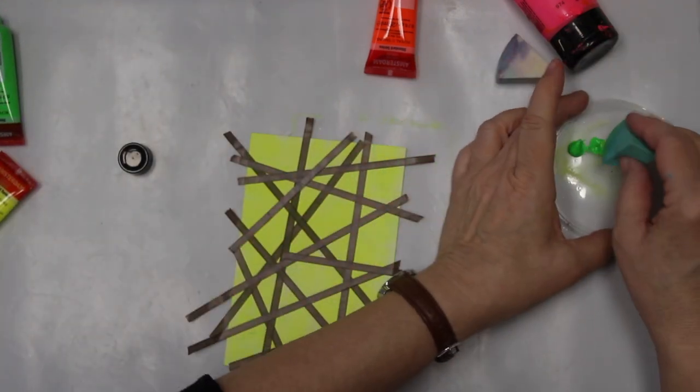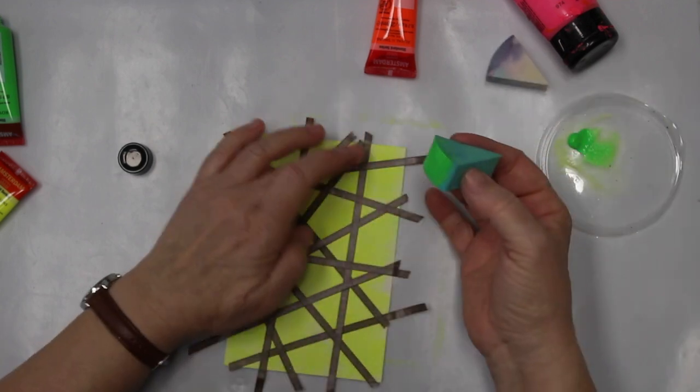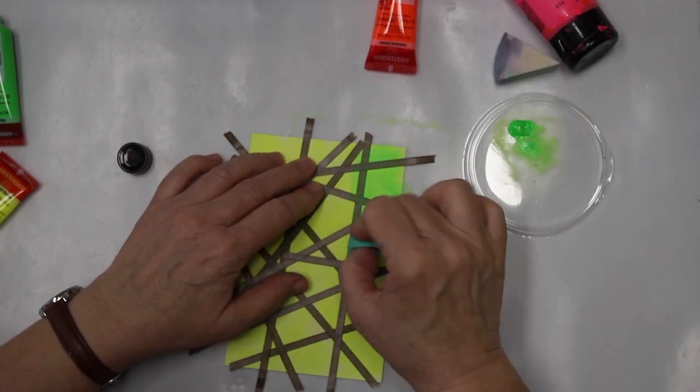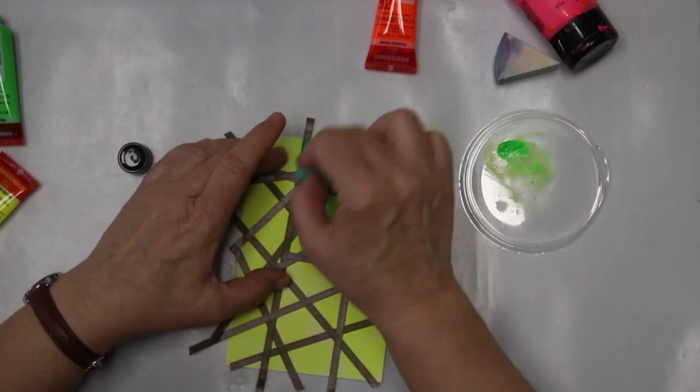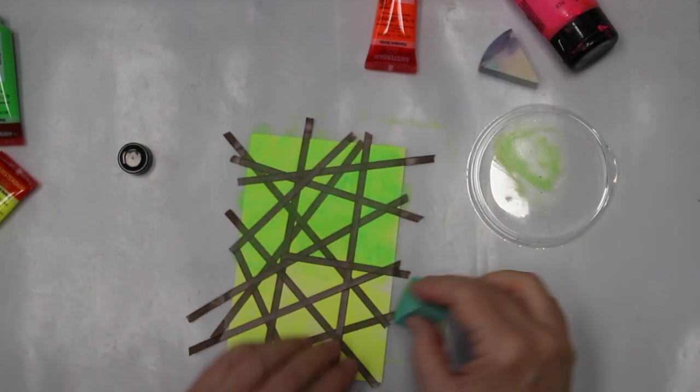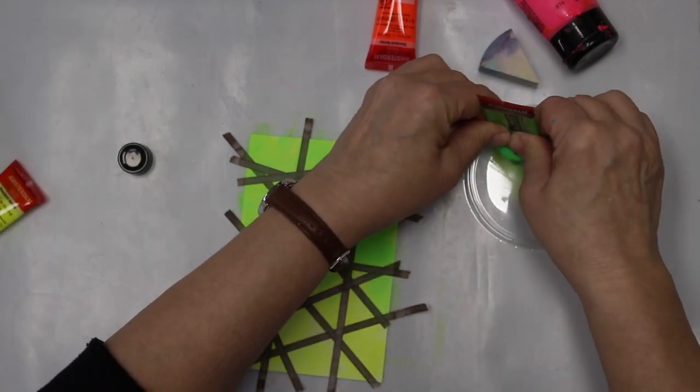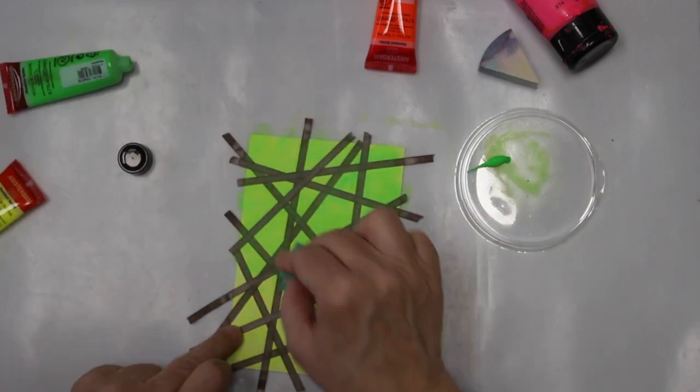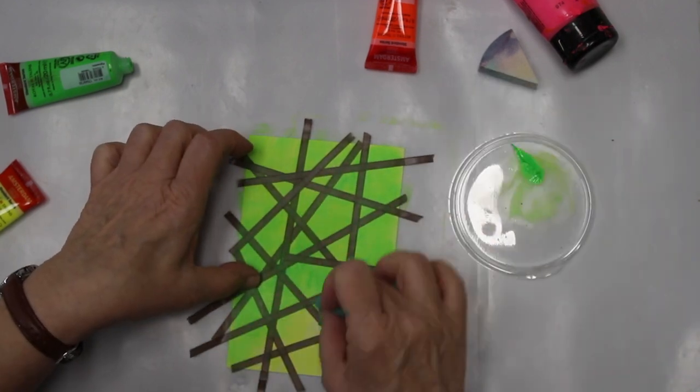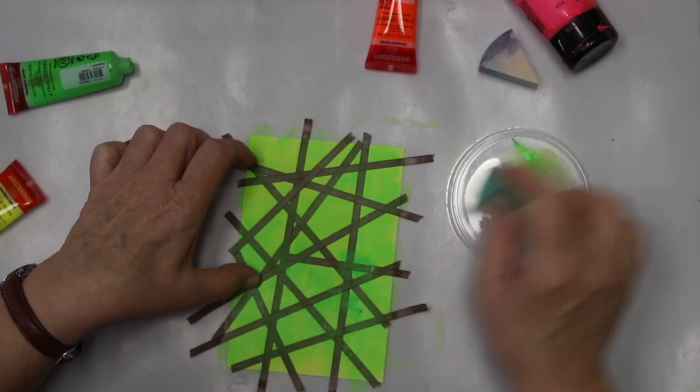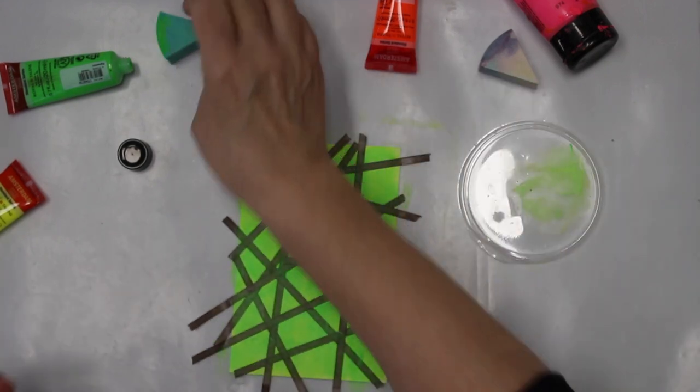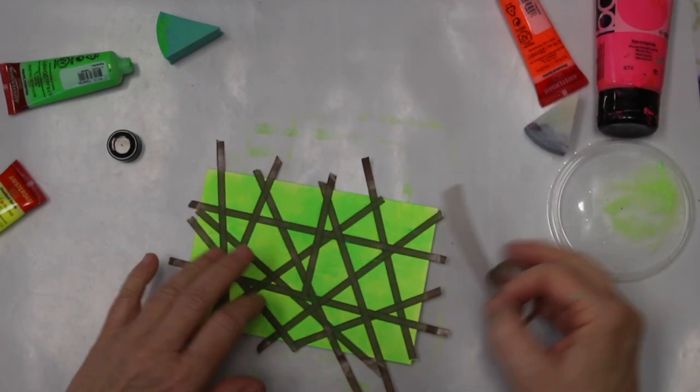I don't think I need to clean the sponge with the yellow, but I'm going to switch the sponge when I go to the red colors. Okay, I'm going to let it dry again, and then I will be back. And more tape.